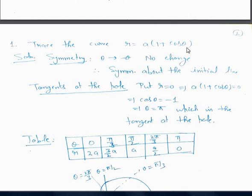Let's take the first example. The curve is R equals A(1 + cos theta). If we replace theta by minus theta, we see that cos(minus theta) equals cos theta, so there is no change in the equation of the curve. Therefore the curve is symmetrical about the initial line.